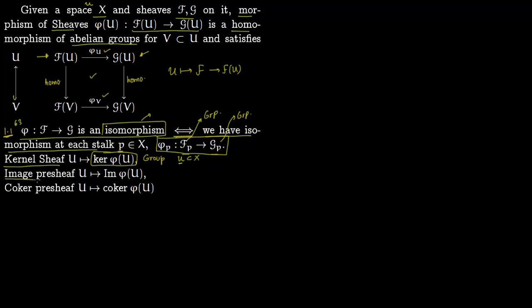Then we talk about the image pre-sheaf. The image is generally a pre-sheaf — you have to sheafify it to make it a sheaf. You feed in U and it gives you the image of φ(U). Similarly you have a cokernel pre-sheaf: you feed in U and it spits out the cokernel of φ(U).